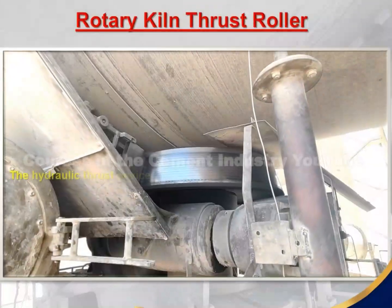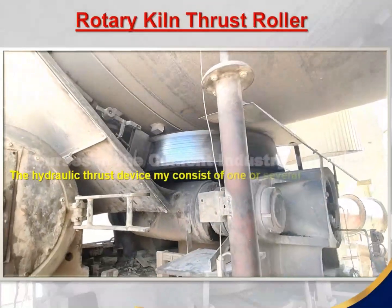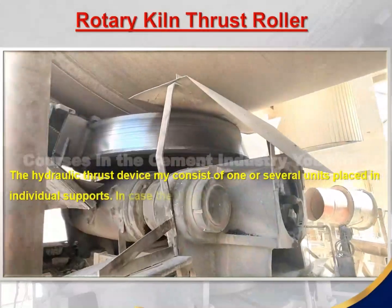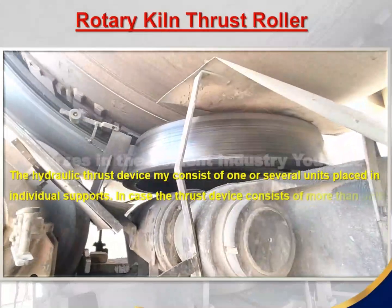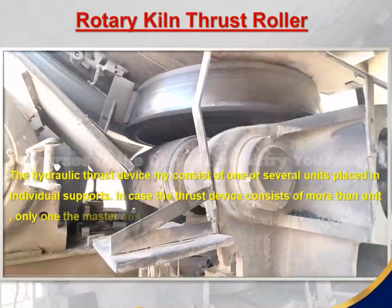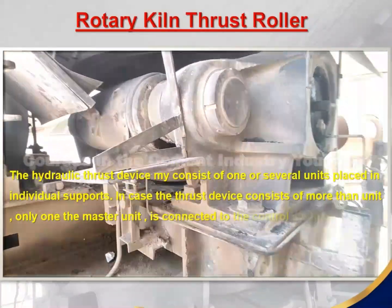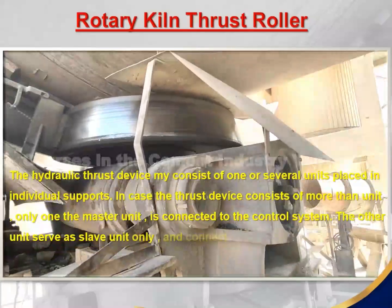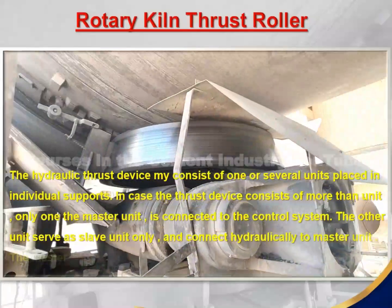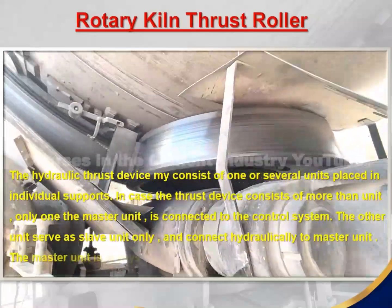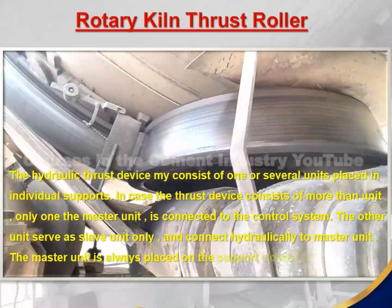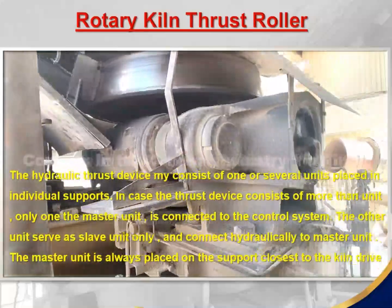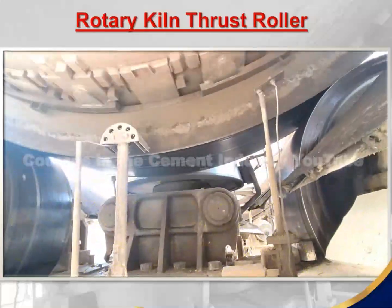The hydraulic thrust device might consist of one or several units placed in individual supports. In case the thrust device consists of more than one unit, only one — the master unit — is connected to the control system. The other units serve as slave units only and connect hydraulically to the master unit. The master unit is always placed on the support closest to the rotary kiln drive.